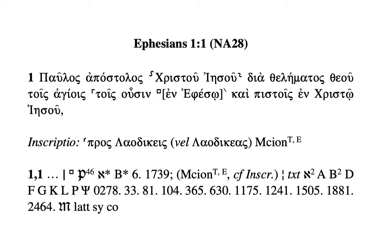Then Codex Sinaiticus, or Aleph, with an asterisk, which means it's the original hand or the original writing of the scribe — implying there's a corrected version later in the equation somewhere. Then B, or Vaticanus, sometimes written as 03, and again it's also an uncorrected reading — the original hand of the scribe at the time of writing in the 4th century.